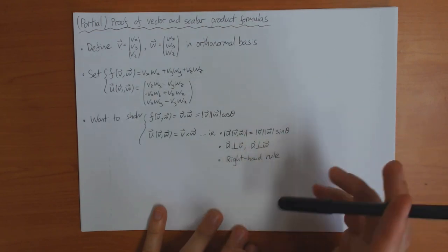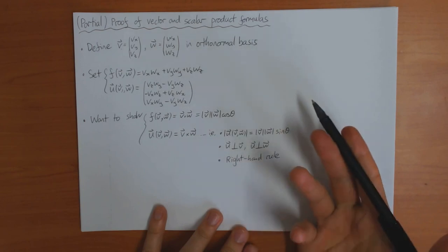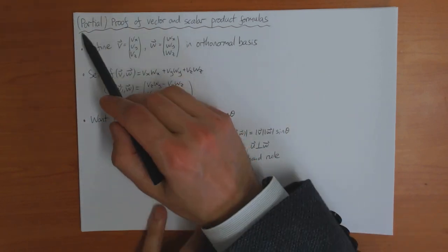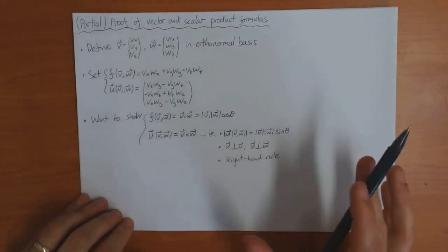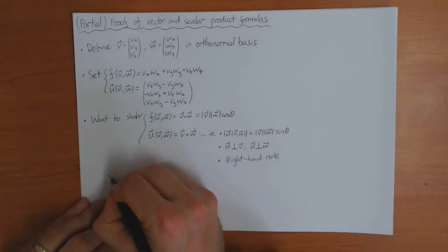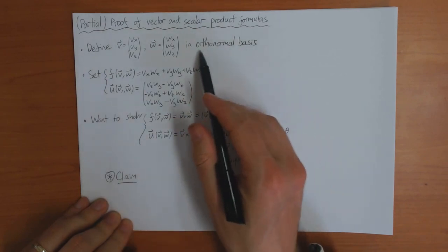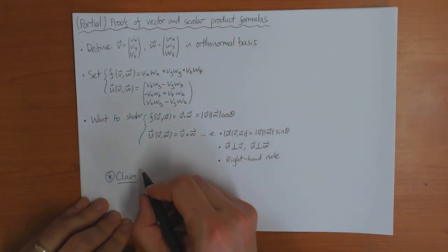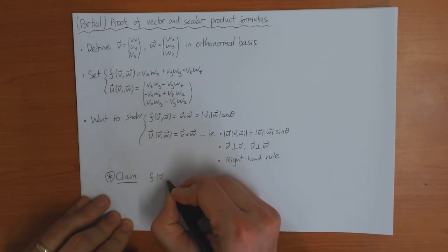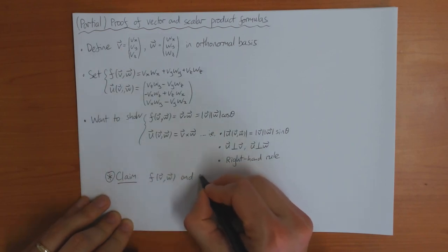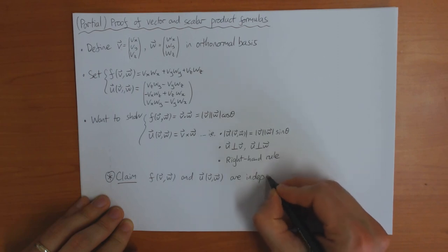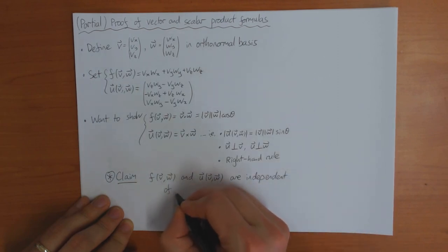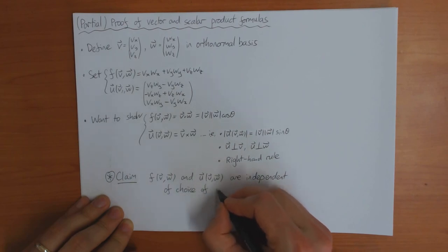Now unfortunately, I won't be able to prove it completely because the complete proof is quite difficult. So I'm going to show a partial proof. What this means is I'm going to prove this is true, provided that I am free to choose the orthonormal basis that I want. So I claim that these functions f of v, w and u of v, w are independent of the choice of orthonormal basis.